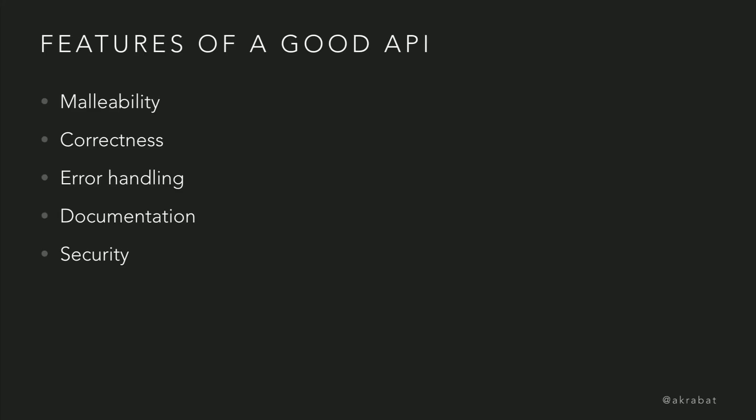There are five features of a good API in this talk. You will probably come up with a different five features, but we're going to cover these ones: malleability, correctness, error handling, documentation, and I'm going to have to talk a little bit about security as well.